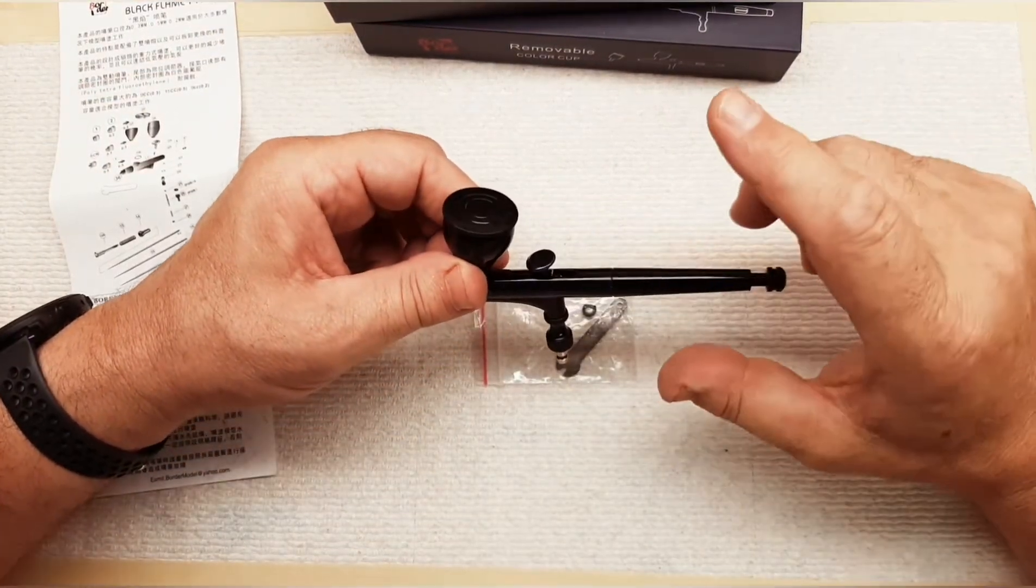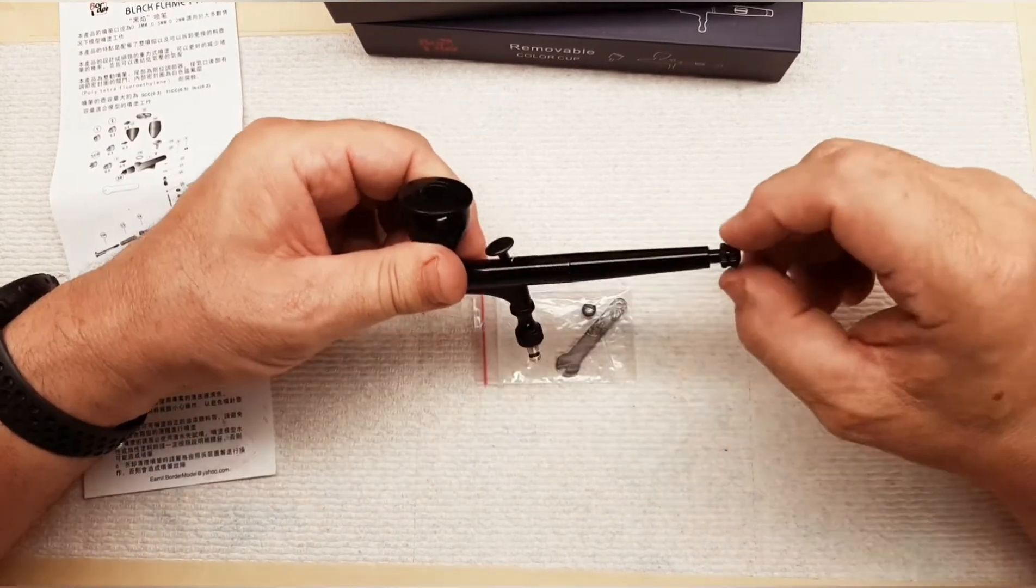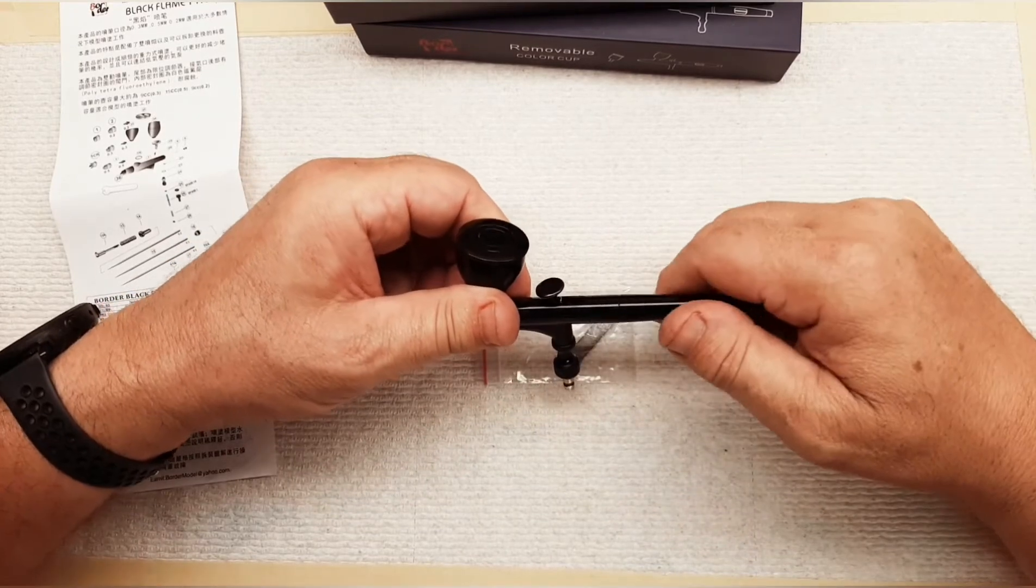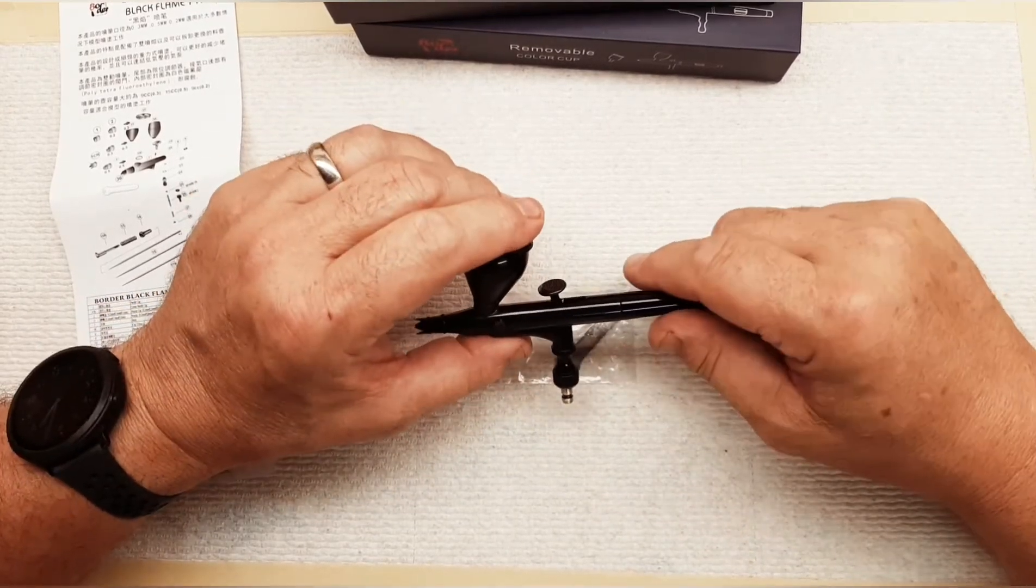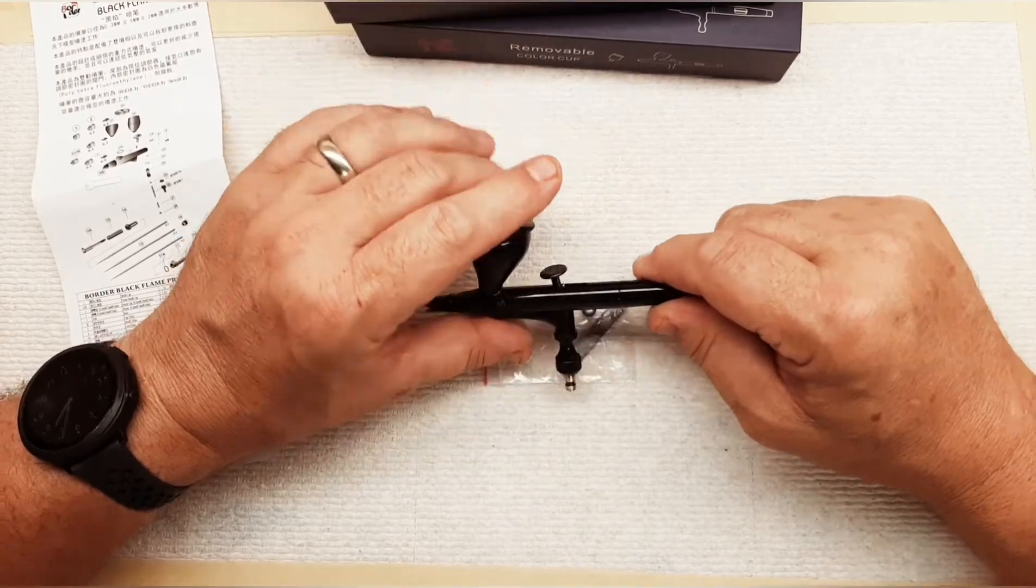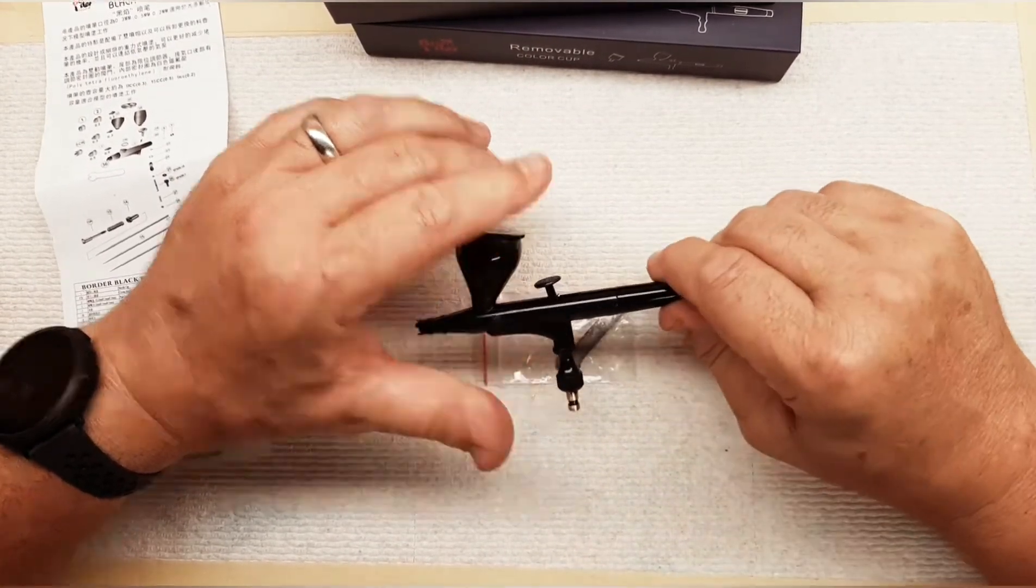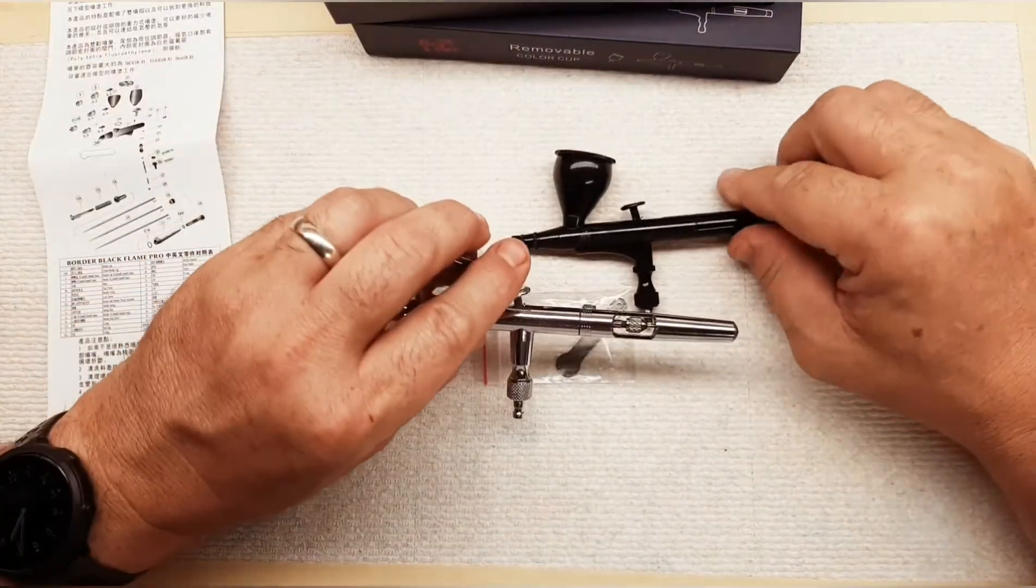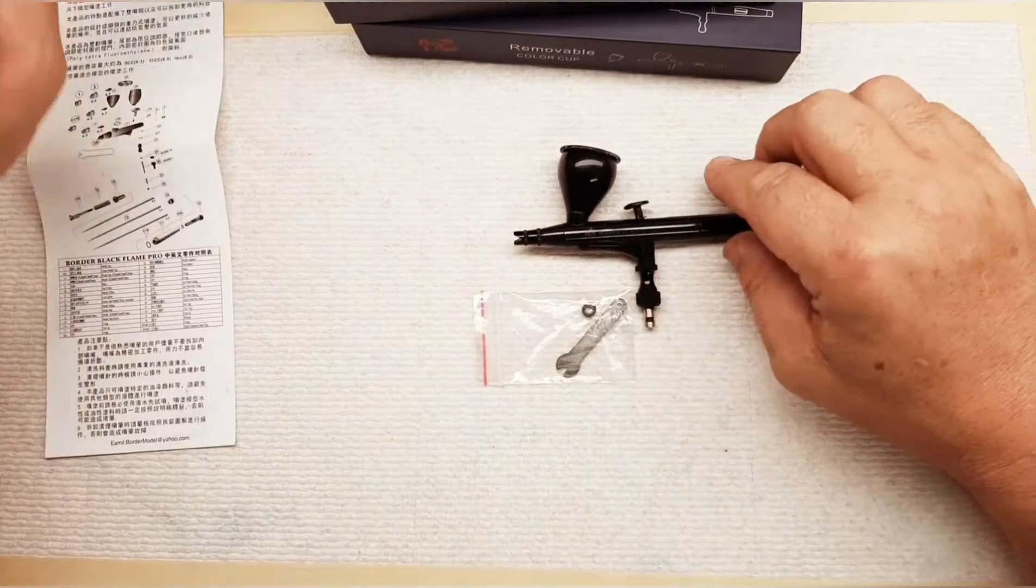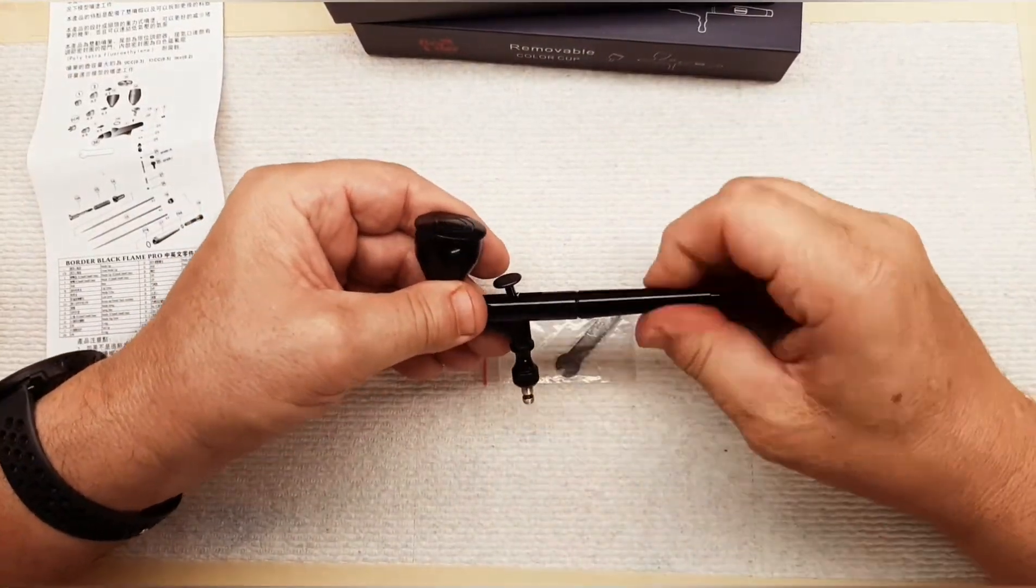But going back to this airbrush, what I like about it is you have an adjustment in the back to control your paint flow. You can turn this in and out to get a different paint flow. What I noticed is the version 2, in all my research so far, the only difference I can find is on the version 2 this is opened up such as an Iwata so that you can get to this little tightening device for the tip itself. This doesn't have that. So obviously, if you need to get into it, you have to open this all up.